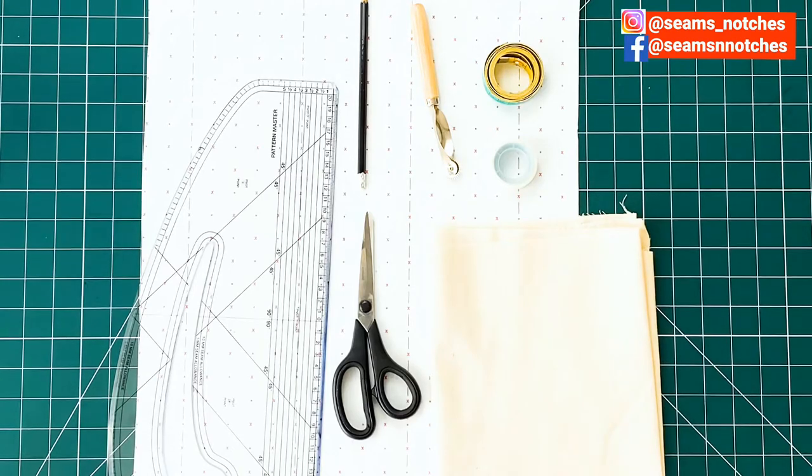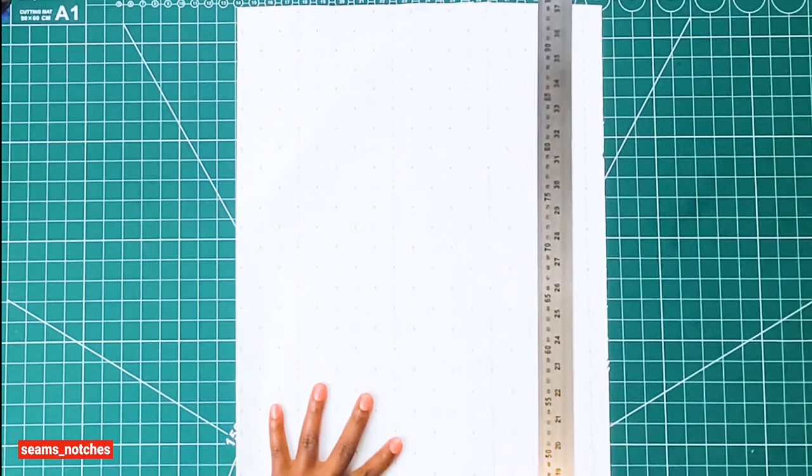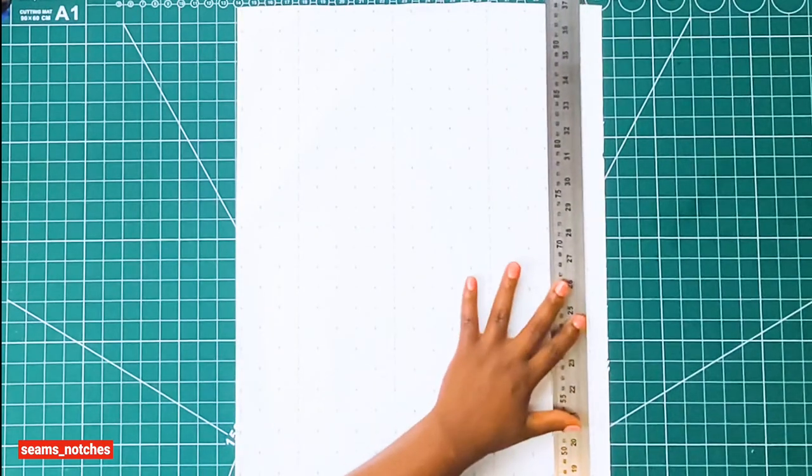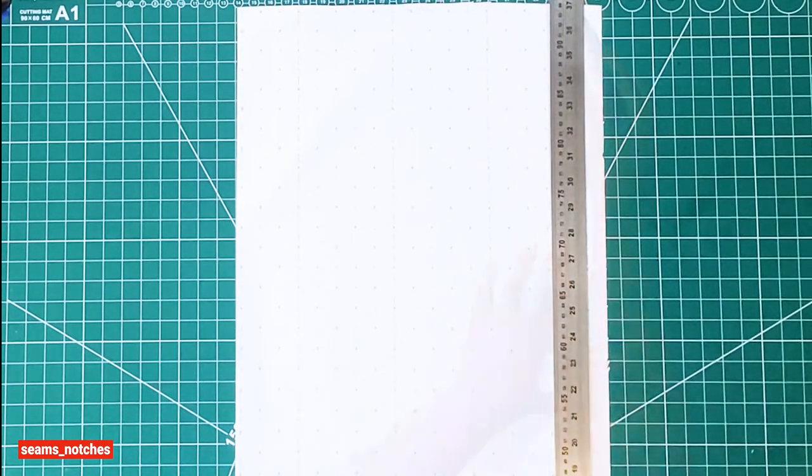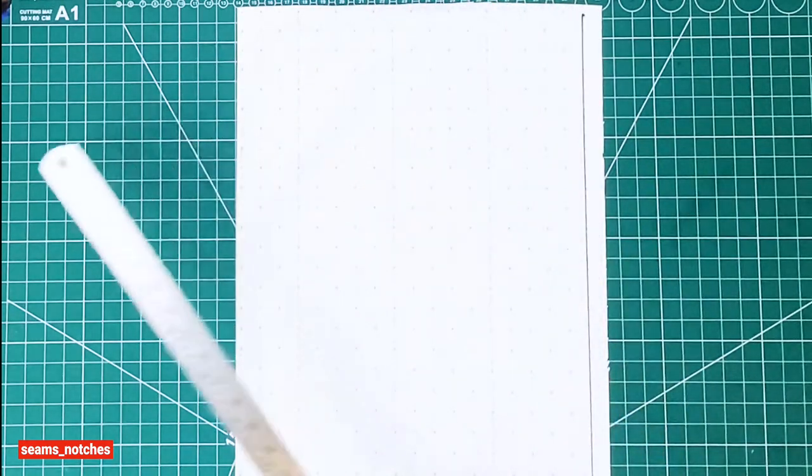Today we're going to be using fabric, and make sure you get fabric that is wide enough for your pattern. First of all, we're going to draw a vertical line very close to the edge of our pattern paper.